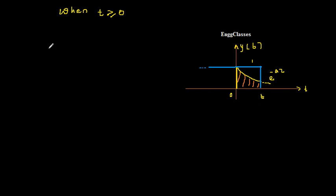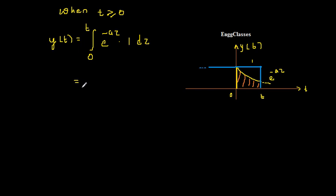Now I write the expression for y(t) under this condition. The limits of integration change from the general minus infinity to plus infinity, to 0 to t, because the integration starts from position 0. So y(t) = integral from 0 to t of e^(-aτ) · 1 dτ. The integration of e^(-aτ) with respect to τ is e^(-aτ) divided by (−a), evaluated from 0 to t.